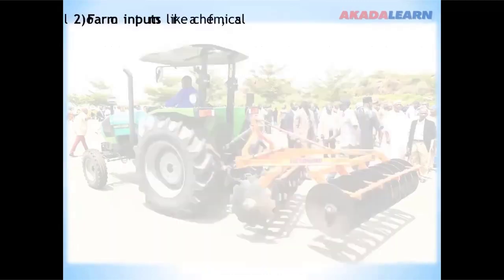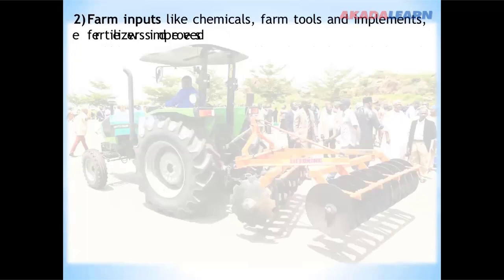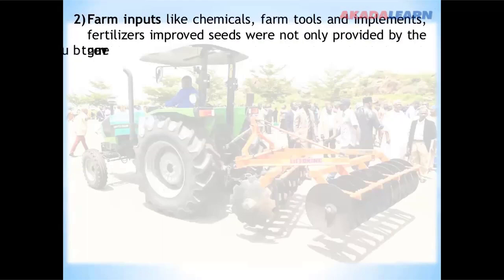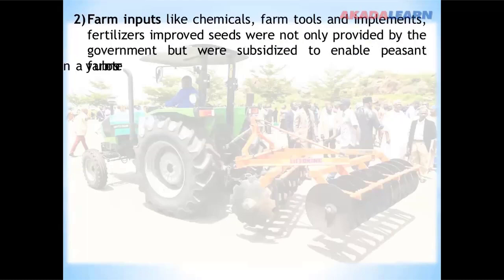Number two: provision of farm inputs like chemicals, farm tools and implements, fertilizers, and improved seeds. The improved seeds are not just provided — the government subsidizes them to enable peasant farmers to buy them with ease and make use of them.